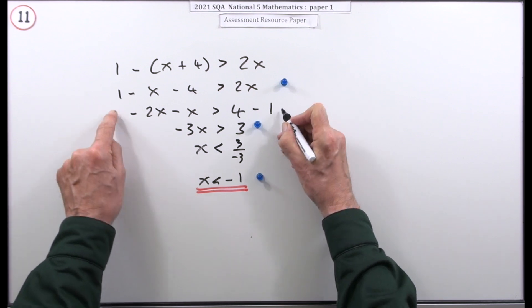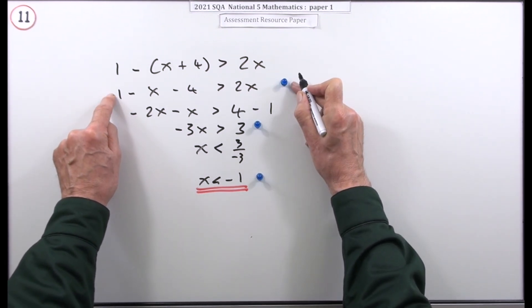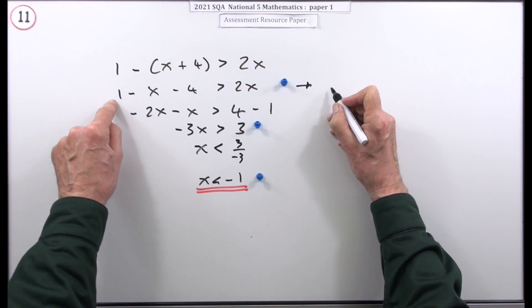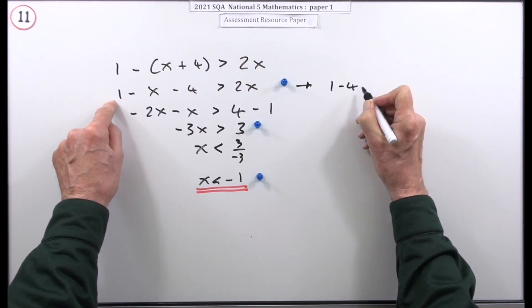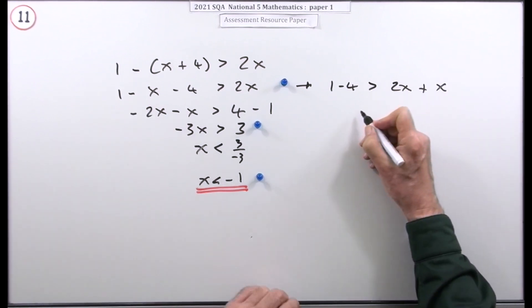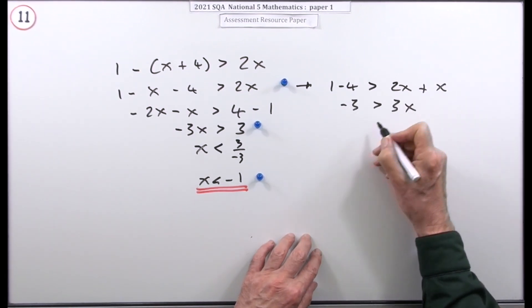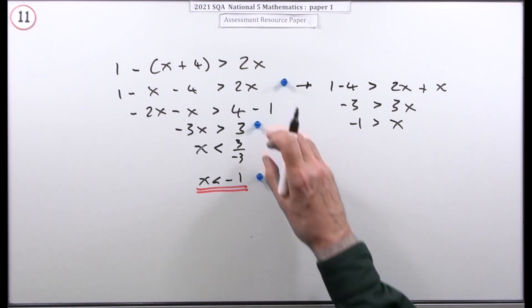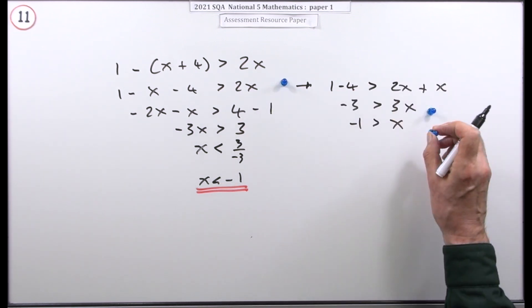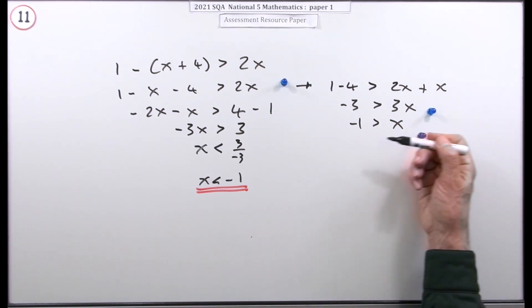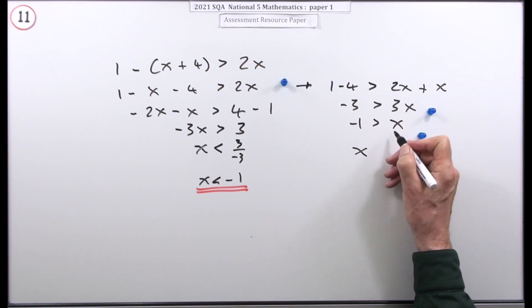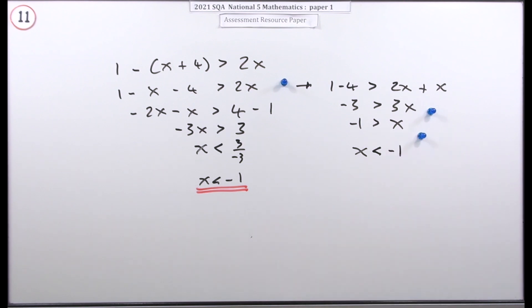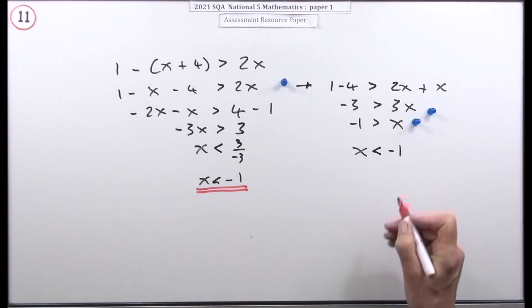The alternative: once you've expanded, leave the x's on the right. So from the expanded form you get 1 minus 4 is greater than 2x plus x, giving negative 3 is greater than 3x. Divide both sides by 3: negative 1 is greater than x. They give you the mark for that form, and you'd normally just read it backwards: x is less than negative 1.